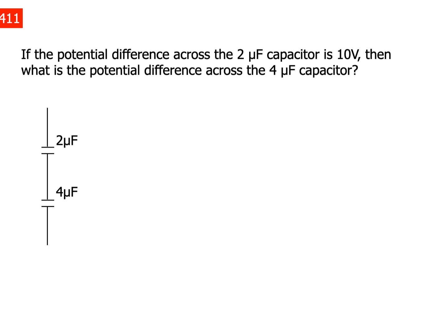This problem says that the potential difference across the two microfarad capacitor is 10 volts, and I've got to figure out what the potential difference is across the four microfarad capacitor. These two capacitors are in series, which means the charge on the two microfarad capacitor is the same as the charge on the four microfarad capacitor.